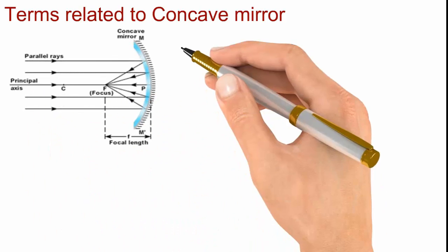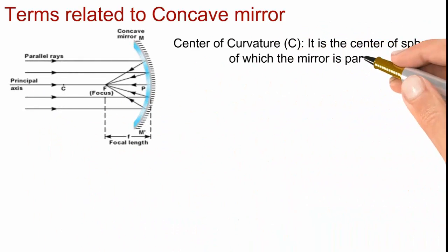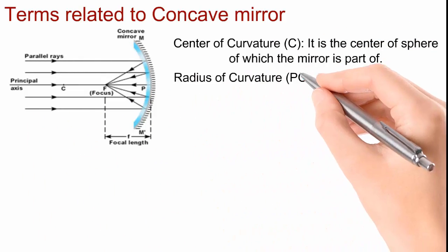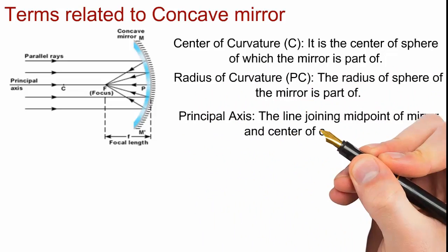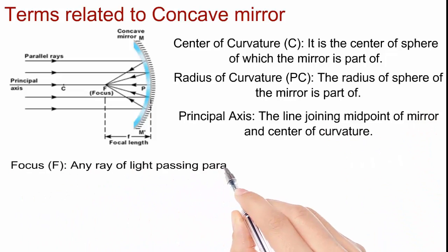Let us discuss some terms related to spherical mirrors. Coming to a concave mirror, you can see the diagram here. Center of curvature: it is the center of sphere of which the mirror is part of. Radius of curvature: the radius of sphere of the mirror is part of. Principal axis: the line joining midpoint of the mirror and center of curvature.